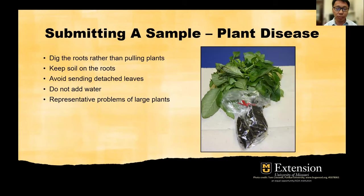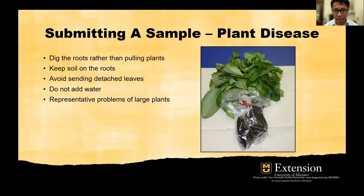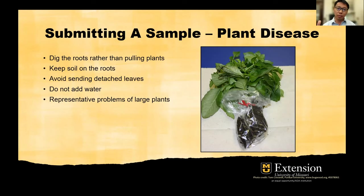Please avoid sending detached leaves as they dry out during transportation. Do not add water because high humidity will attract secondary infection. Please pick representative problem samples from large plants such as bushes or trees. If you have a leaf spot, you can send a leaf with a branch and twig. But if you have branch dieback, I will need a piece of wood about 10 to 15 inches long with symptoms showing the transition zone between diseased and healthy tissue. Please also send photos of the tree before sending the samples.